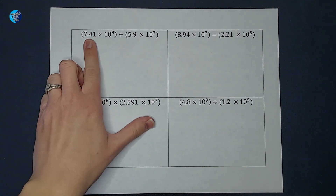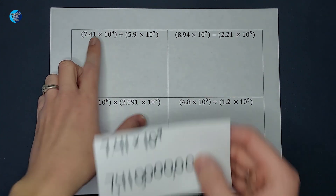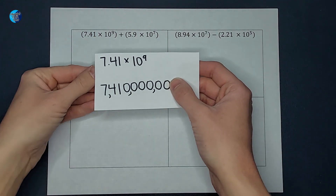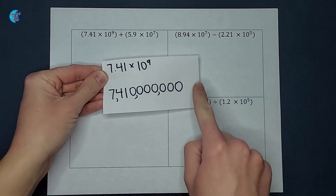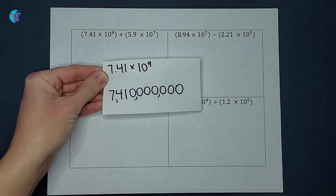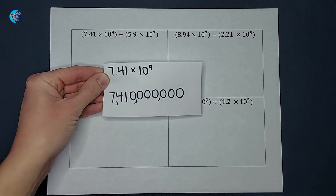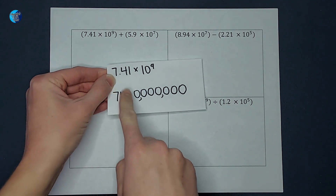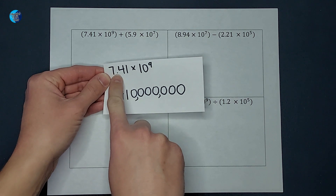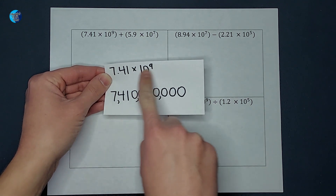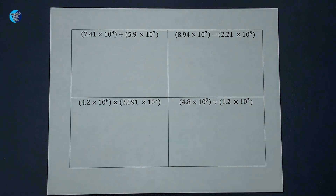For example, 7.41 times 10 to the ninth — if I were to write that out it would look like this: 7,410,000,000. How I got that was I took this decimal and moved it to the right nine times. Scientific notation just makes it easier to work with these very large or very small numbers.